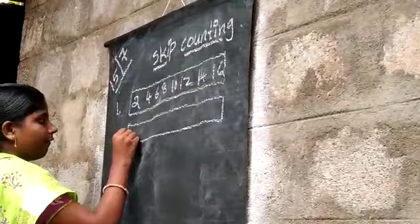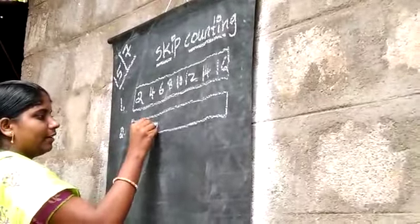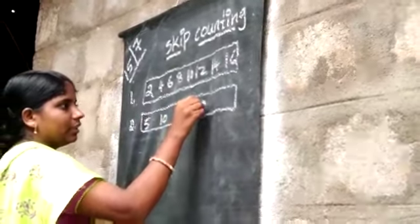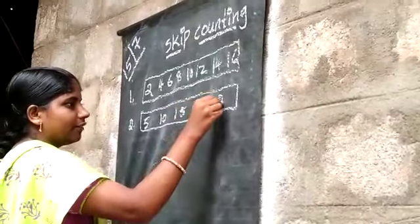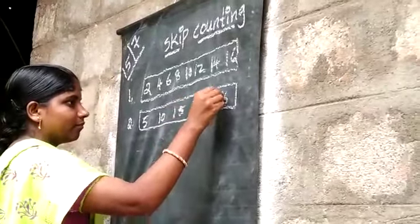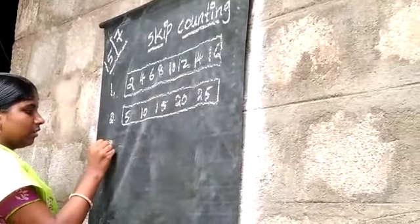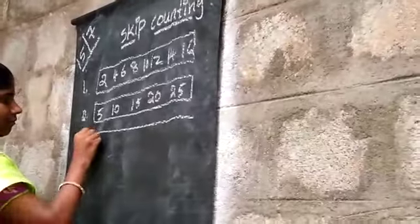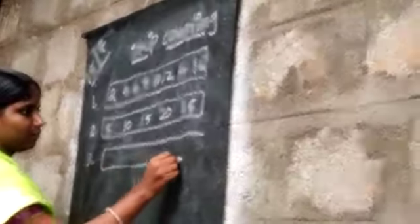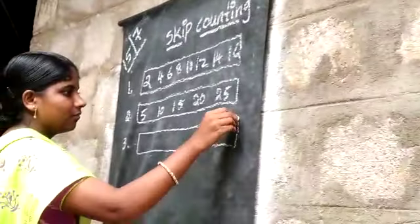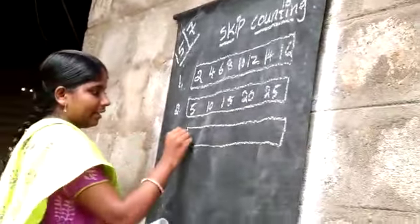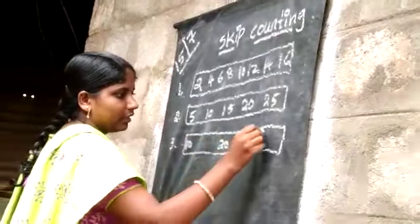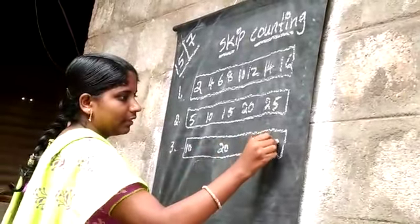Second rabbit test: 5, 10, 15, 20, 25. Next, third rabbit: 10, 20, 30.